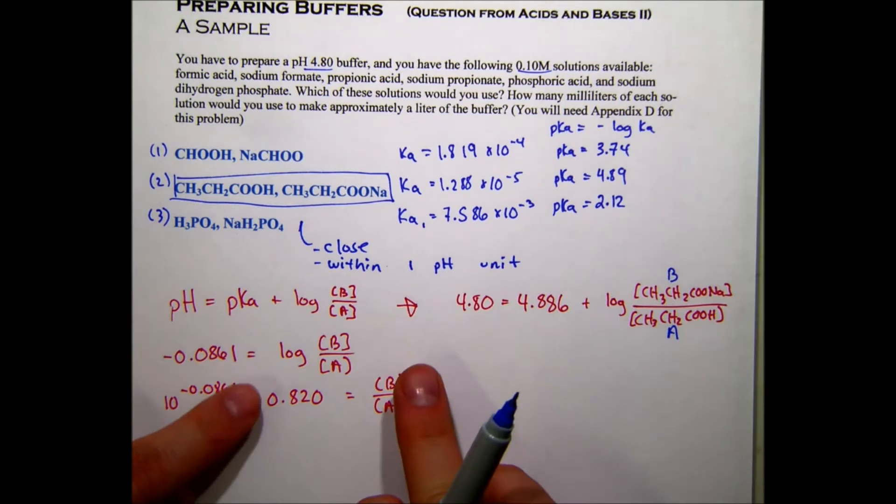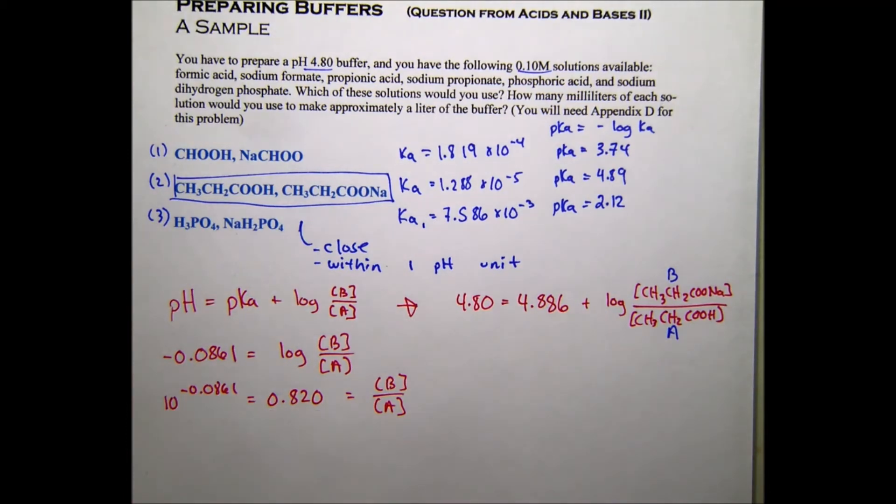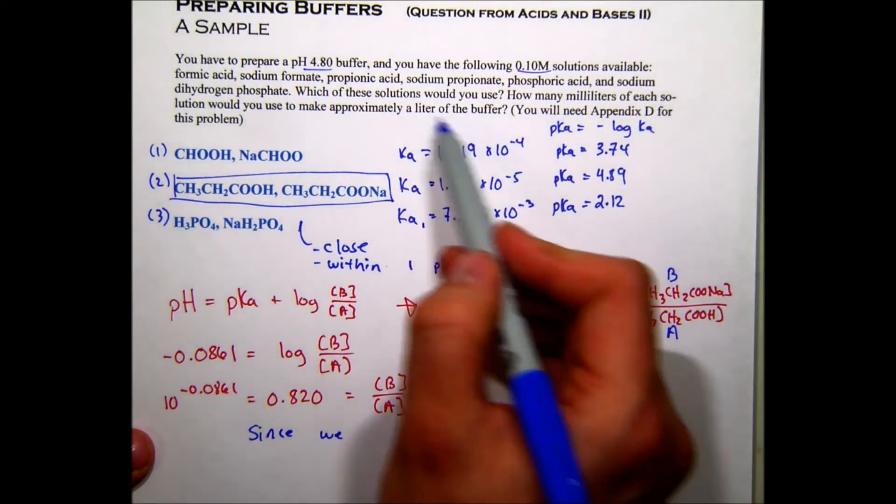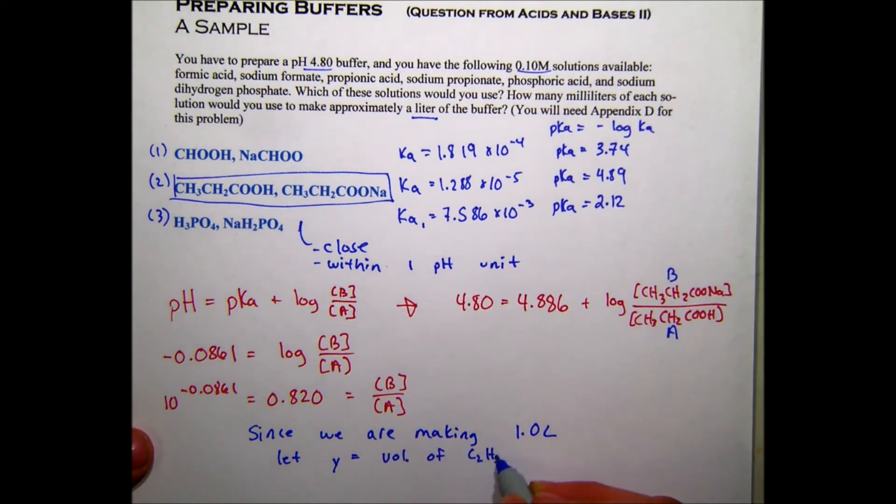So I know that whatever I do, the concentration of the base to the concentration of acid must meet the ratio of 0.820. So I'm going to need less base than acid, essentially. So we're asked to make 1 liter of the buffer. Since we're making 1 liter, we want to let the variable y equal the volume of our base, which is C2H5COONa.